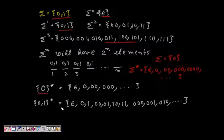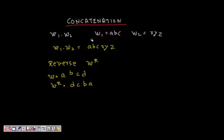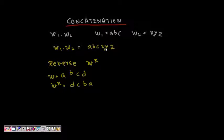Now let's talk about concatenation of strings. Given two strings w1 and w2, concatenation means appending w2 to w1. For example, if w1 is 'abc' and w2 is 'xyz', then w1 concatenated with w2 becomes 'abcxyz'.